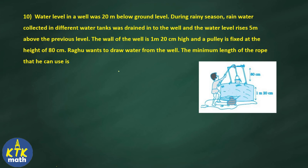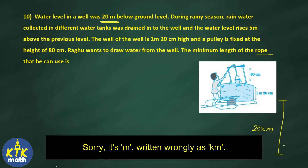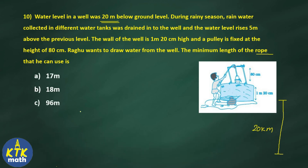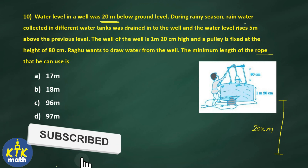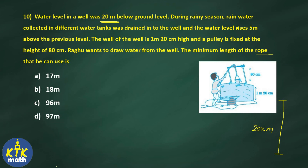To find the minimum rope length: the water was initially 20 meters below ground level. After the water level rises 5 meters, the new water level is 15 meters below ground level. So from the ground level down to the water is 15 meters.